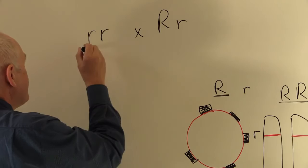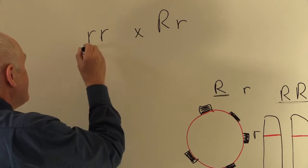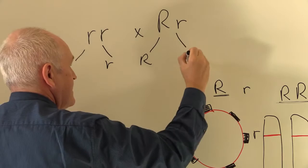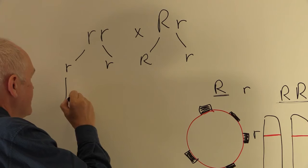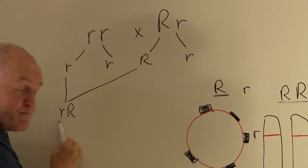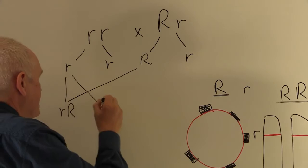Now to reproduce, the mother will make ova, the father will make sperm, and these are going to recombine. So one possibility is that combining with that, and that would give us a Rhesus positive fetus. Alternatively, that could combine with that one, and that would give us a Rhesus negative fetus.